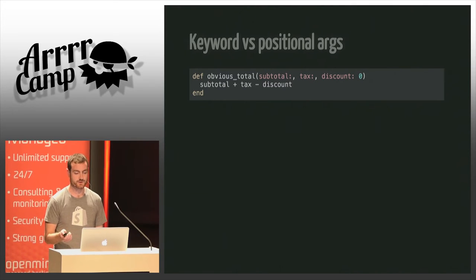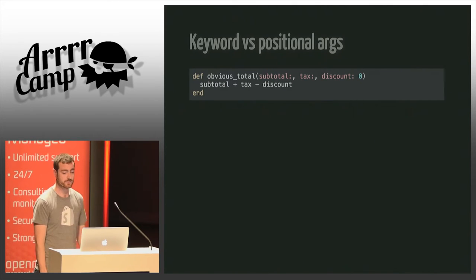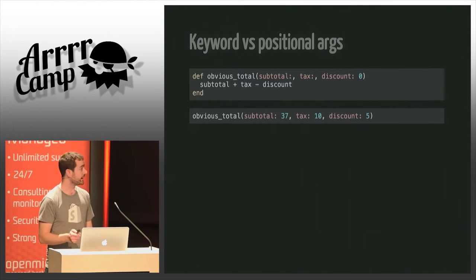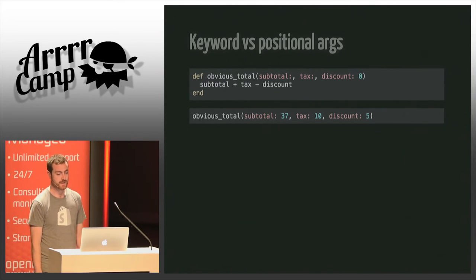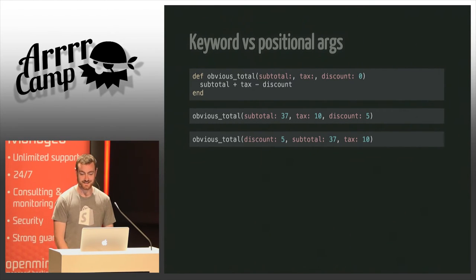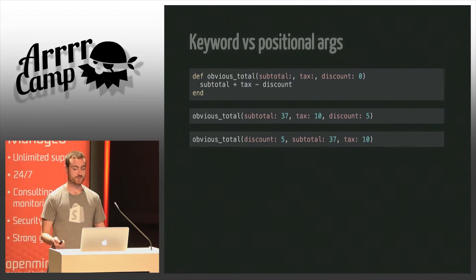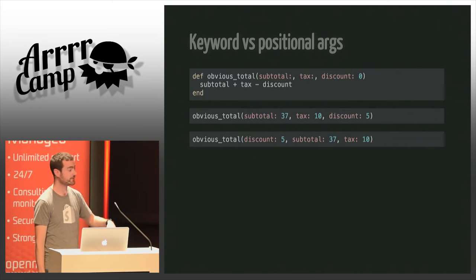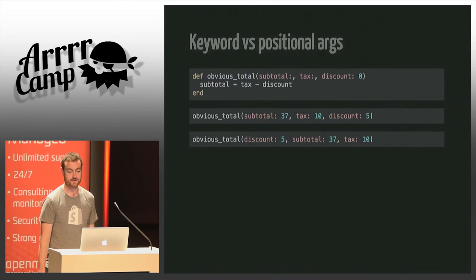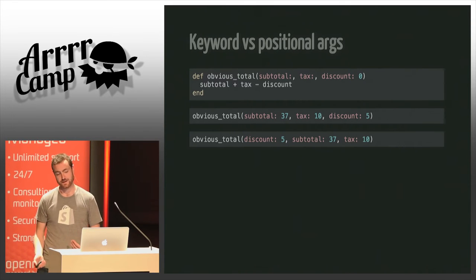If we look at the definition of a method with keyword arguments, we can see it's very similar, but when we read the method call now it's much more clear what we're going to get. Also, the order of the arguments doesn't matter, so if you're a bit OCD like me you can order them alphabetically — we don't need to know the order of the parameters anymore.